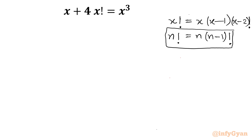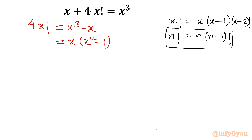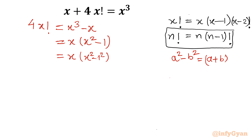Now I will consider the factorial terms on the left hand side only. It will become 4·x! = x³ − x, by taking x away from both sides. We can factor out x, leaving x²−1 on the right. Using the difference of squares identity, we write that as x times (x−1)(x+1).